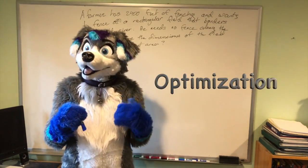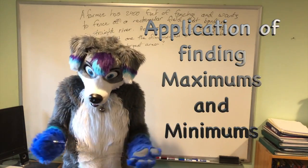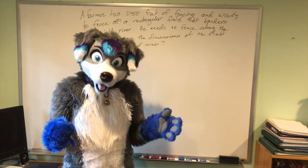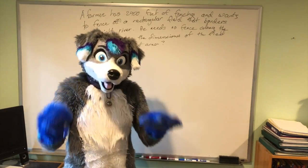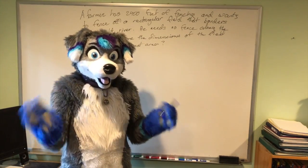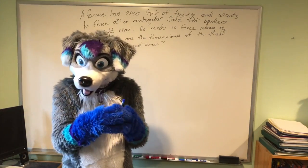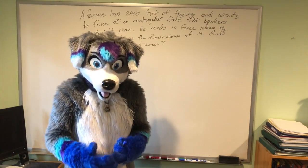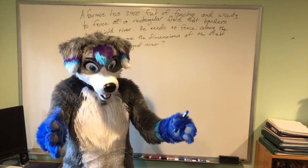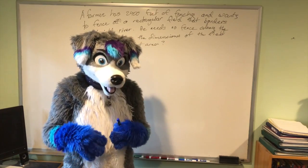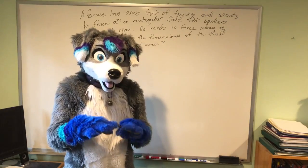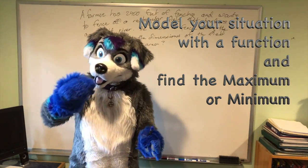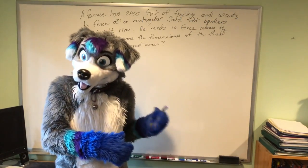So now I'd like to do a problem of optimization, which is just an application of finding maximums and minimums. I'll probably say this again because I think it's important to know that every optimization problem is the same. The idea is you want to maximize or minimize something — say you want to minimize the amount of material it takes to make something, to minimize costs, or you want to maximize something, like making a box with a certain prescribed amount of material and maximizing the volume. But in every case, it really comes down to one thing: you want to model your situation with a function, and then once you have that function, you want to find the maximum or minimum of it, which goes back to the previous idea I talked about in my other video.